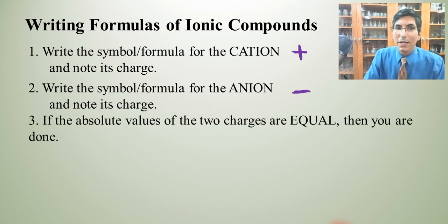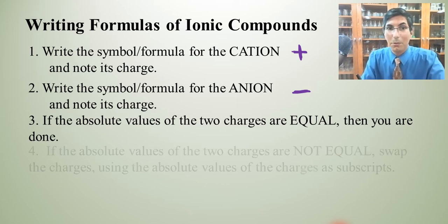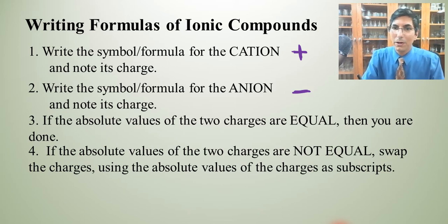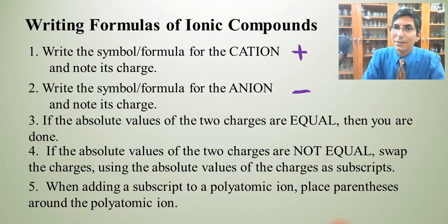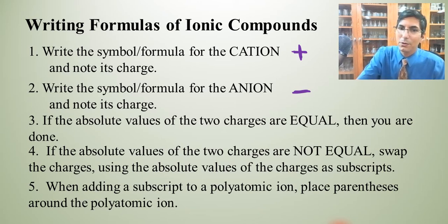The third step is to take a look at those absolute values of the charges and compare them. If they're equal, then you're done and you have the formula. Whereas if they're not equal, they don't cancel out, you have to swap the charges using the absolute values of the charges as subscripts in your formula. Step five is a rule we don't use all the time, but whenever you add a subscript to a polyatomic ion, you want to place parentheses around that polyatomic ion.